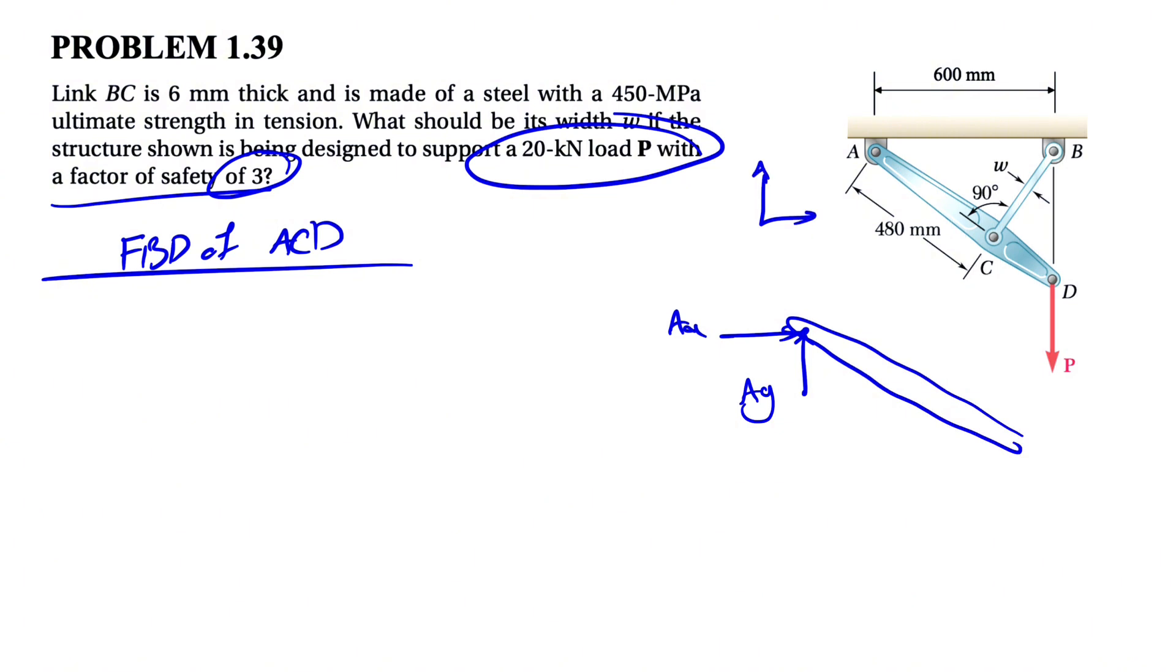Let's call our X and Y in here. We have the member force in the member BC. We can call it FBC. And we'll also have force P in here. And from the question, we know this angle in here is 90 degrees. And the quickest way, since we are in equilibrium, to find the unknowns in here, so we are interested in FBC, we're going to use our moment equation about point A.